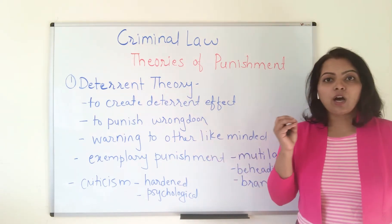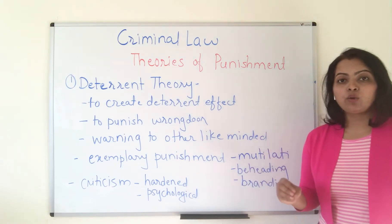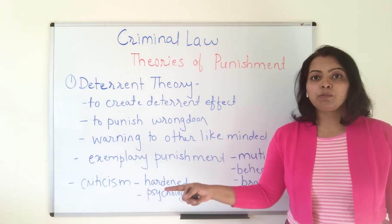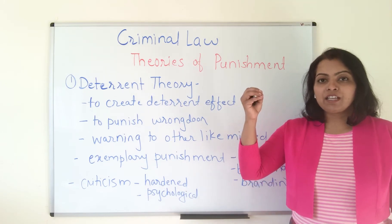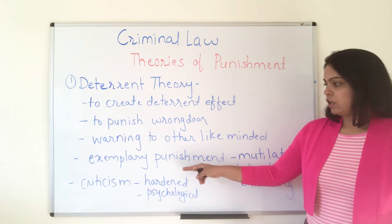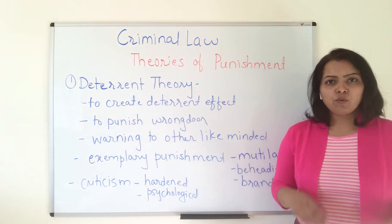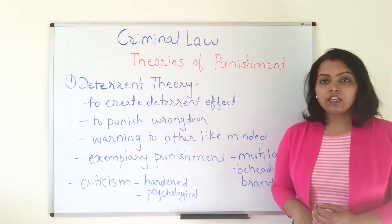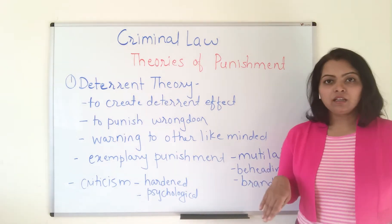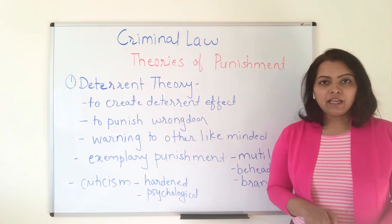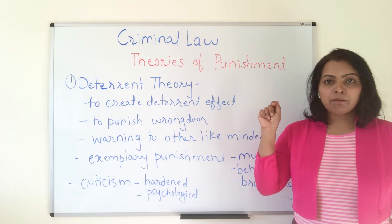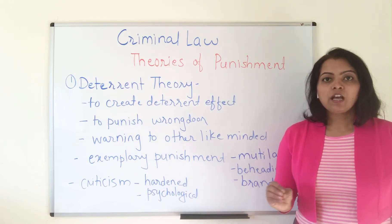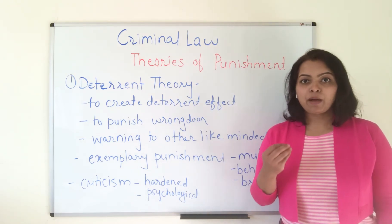Third, it is a warning to other like-minded criminals. If there are criminals who want to commit the same crime, it warns them that if you commit this crime you will be punished with this type of deterrent punishment, bringing their morale down. Fourth, it is an exemplary type of punishment — meaning the punishment is more than the crime. Examples include hanging to death, mutilation in cases of rape, beheading, branding with hot objects, and whipping. These are deterrent or exemplary punishments.